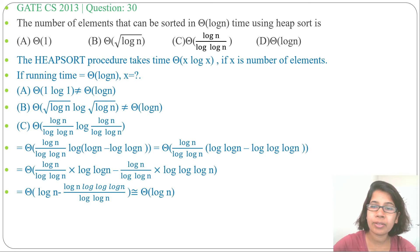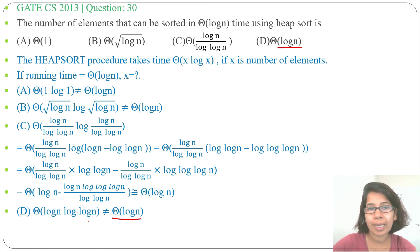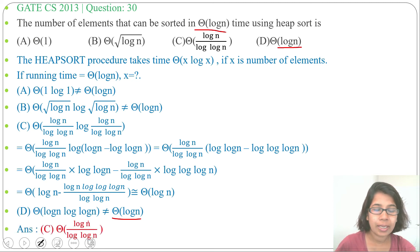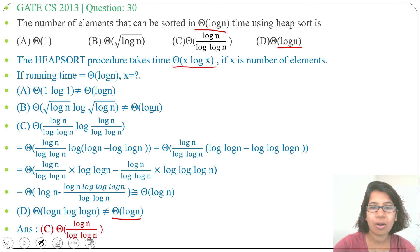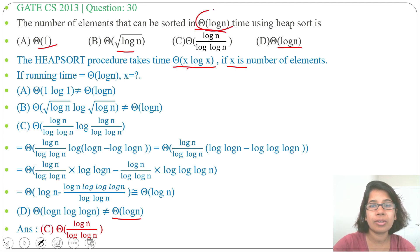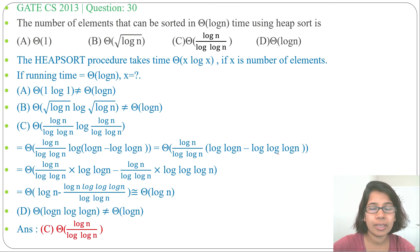Option D: x = log n gives theta of log n · log(log n), which is not equal to theta of log n, so option D is wrong. Therefore options A, B, and D are eliminated, and option C — theta of log n / log(log n) — is the correct answer. Just substitute the number of elements into the heap sort running time formula and check if it equals theta of log n. If this lecture was helpful, please like and subscribe. Thank you.